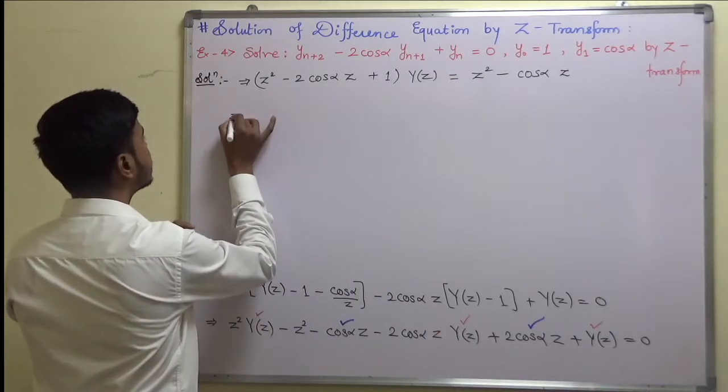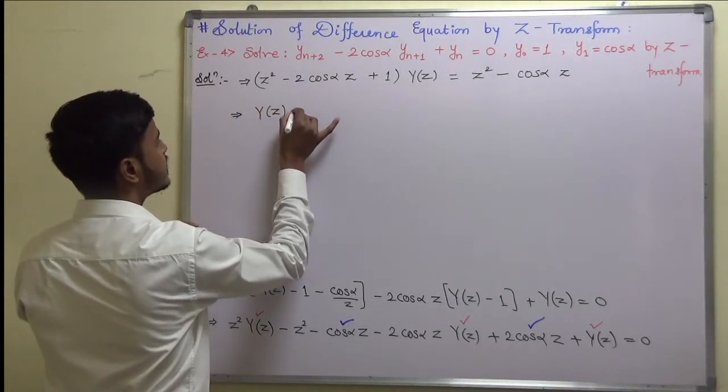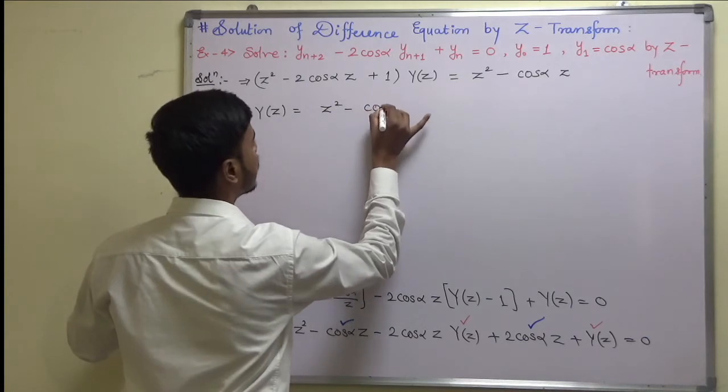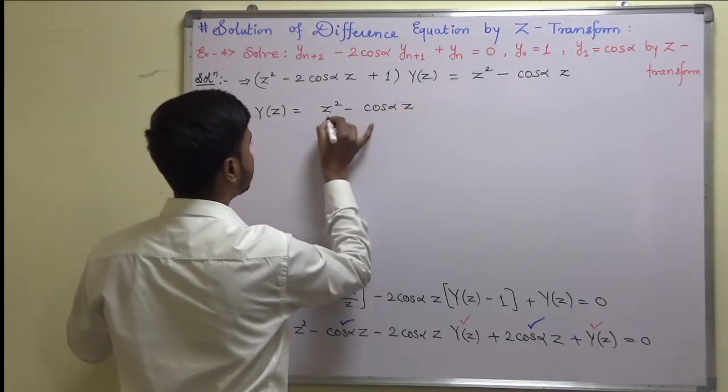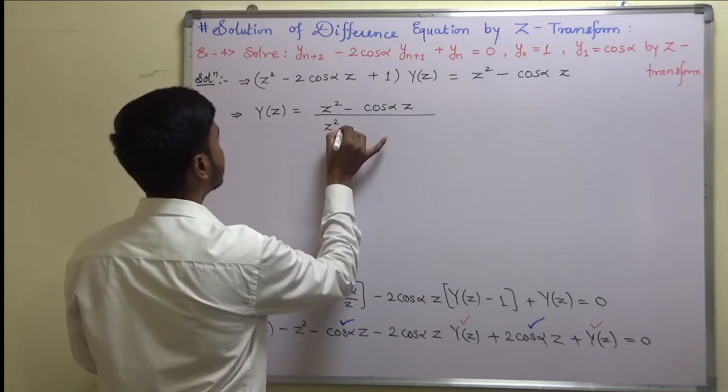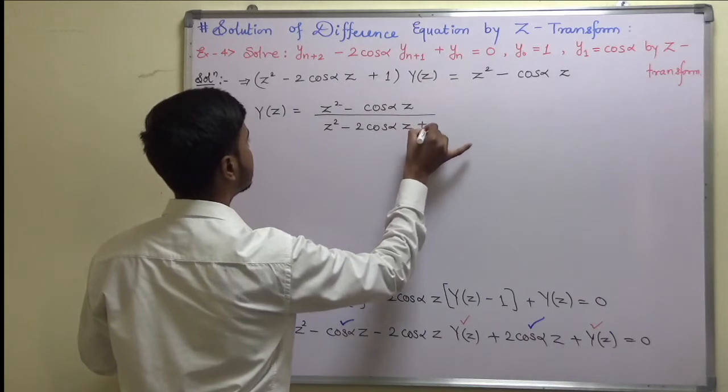2 minus 1 is 1 cos(alpha)z. So now it is like y(z) = [z^2 - cos(alpha)z] / [z^2 - 2cos(alpha)z + 1].